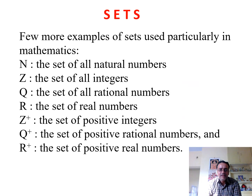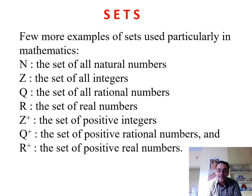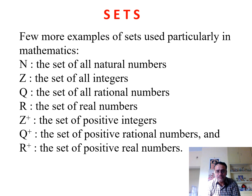Now let us look at a few standard examples of sets. Capital N denotes the set of all natural numbers. Capital Z denotes the set of all integers. Capital Q denotes the set of all rational numbers. Capital R denotes the set of real numbers. Z-plus denotes the set of positive integers. Z-minus denotes the set of negative integers. Q-minus denotes the set of negative rational numbers. R-plus denotes the set of positive real numbers, and R-minus denotes the set of negative real numbers.